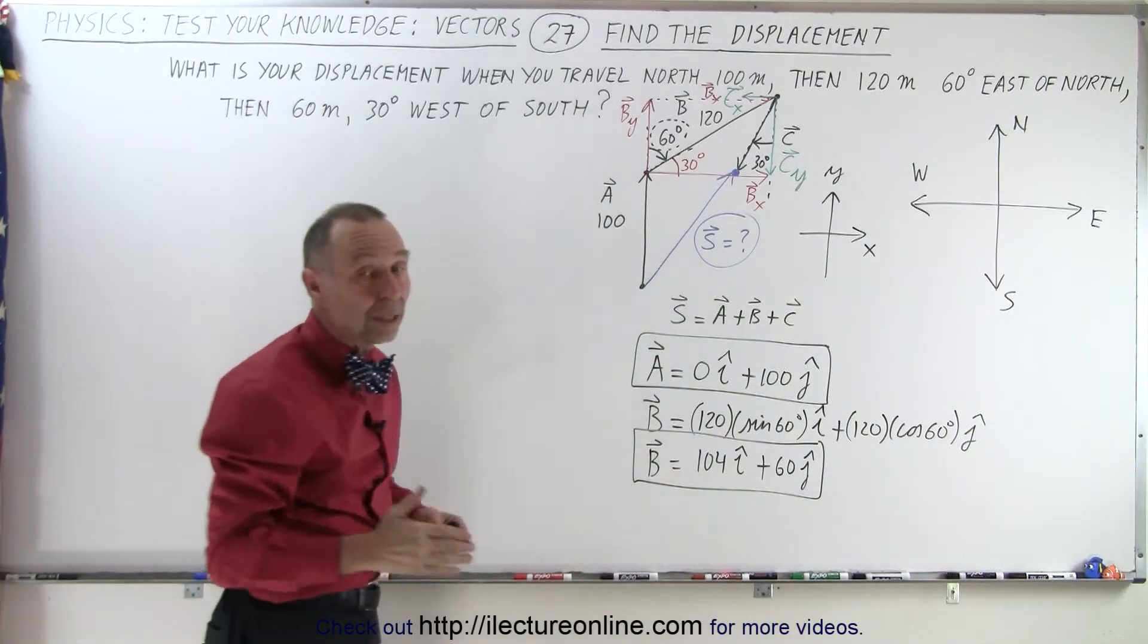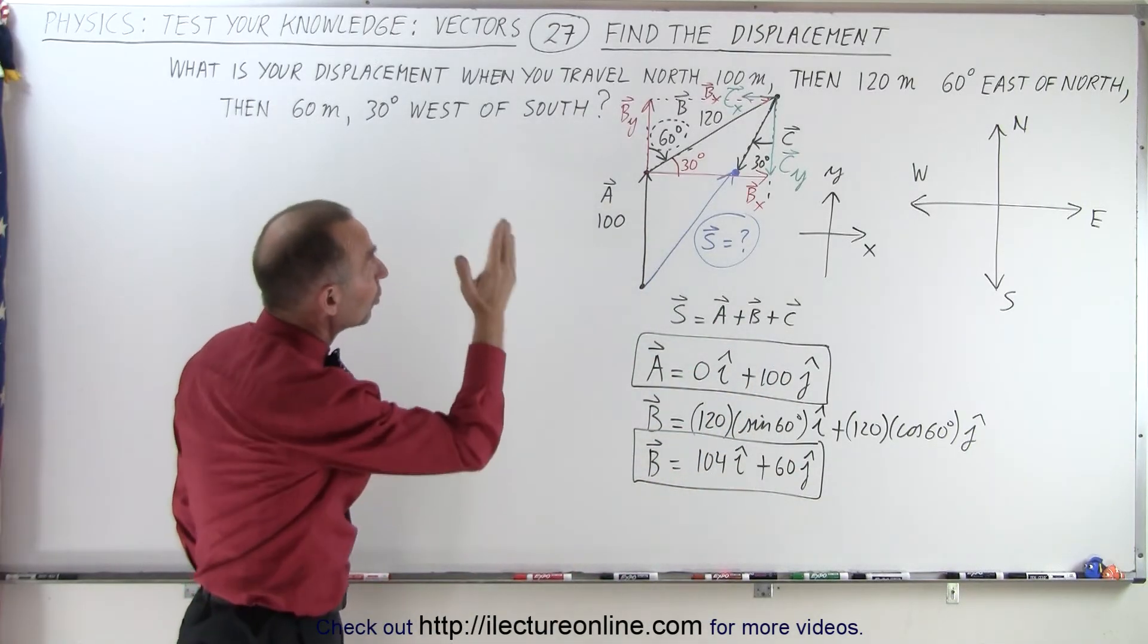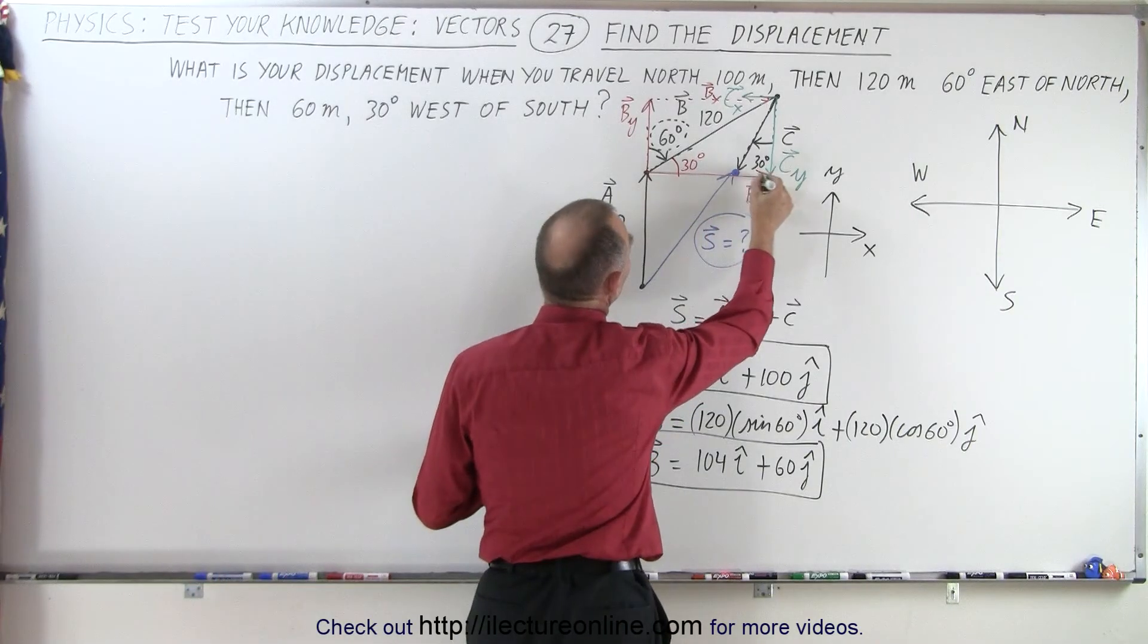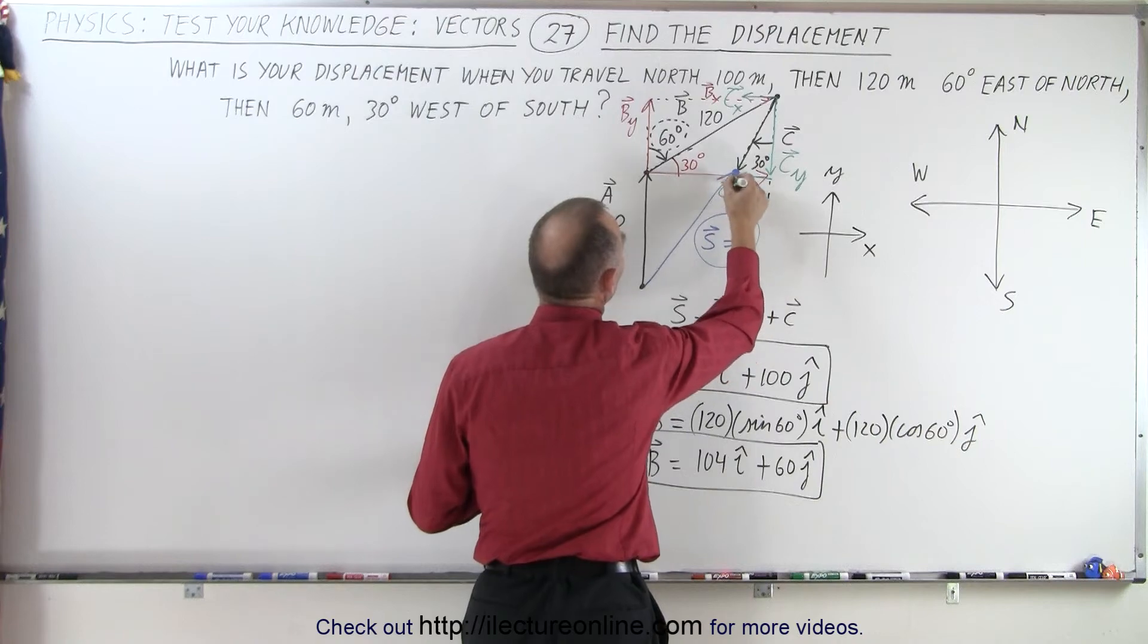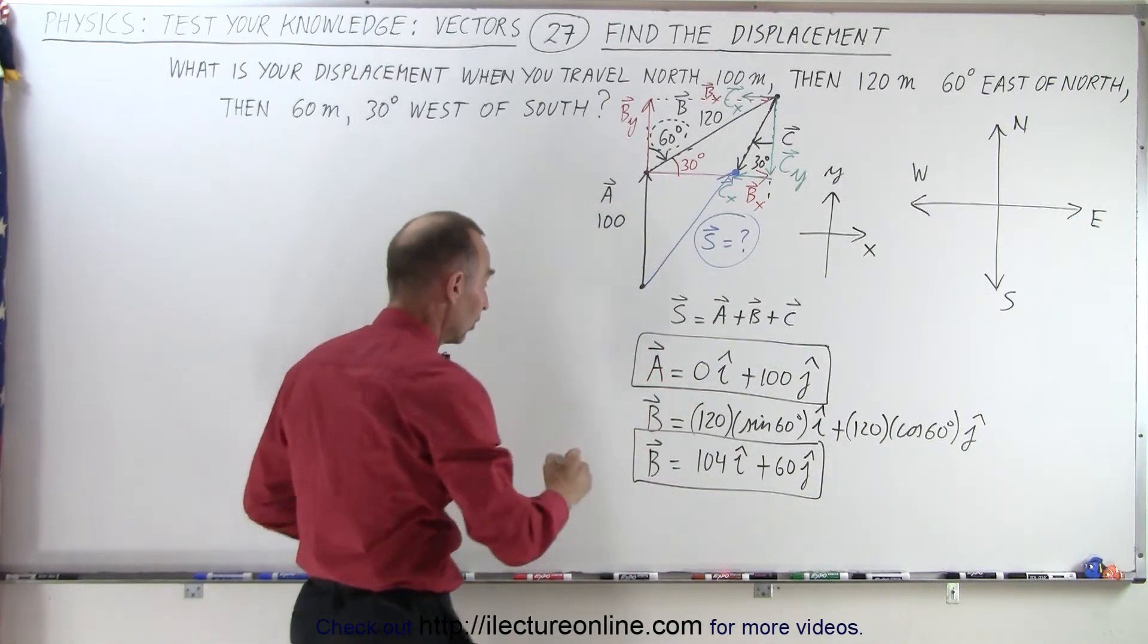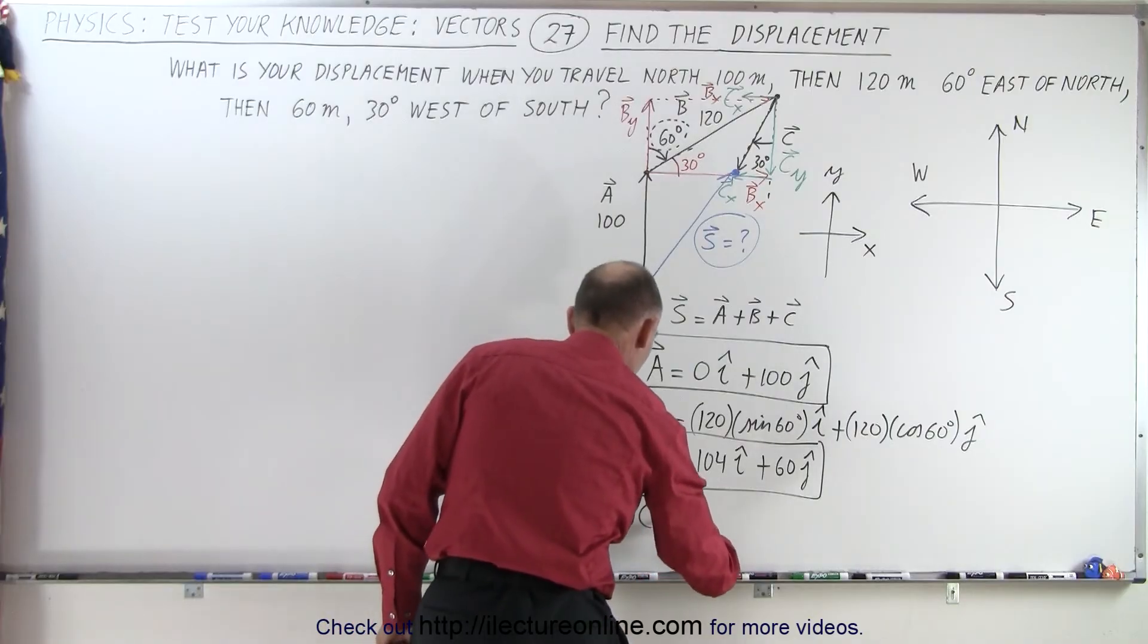And again, notice that the Y component is adjacent to the 30 degree angle, and the X component will be opposite to the 30 degree angle. So this here would be our C sub X. And so therefore, again, be very careful about the trigonometric functions. So you can say that your C vector is equal to, that would be a magnitude of 60, right? 60, right there, 60.